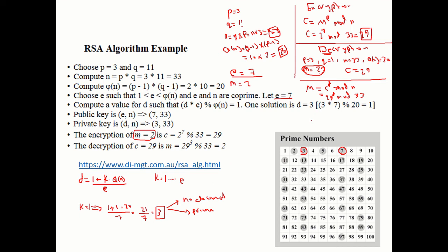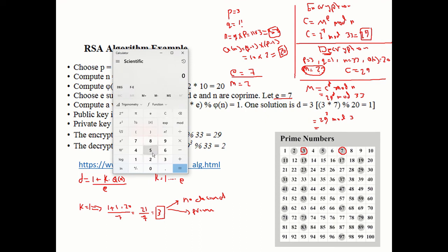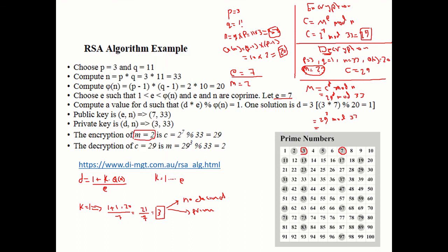Now decrypting: 29^3 mod 33 = 2. Using the calculator: 29^3 mod 33 = 2, which is the same message we encrypted. We successfully recovered the original message.